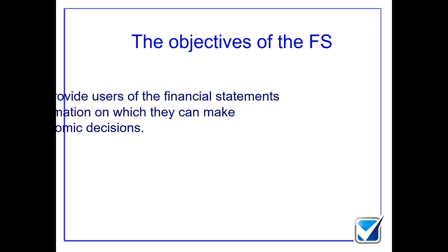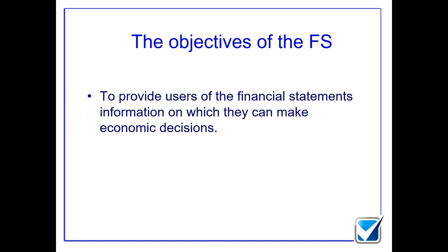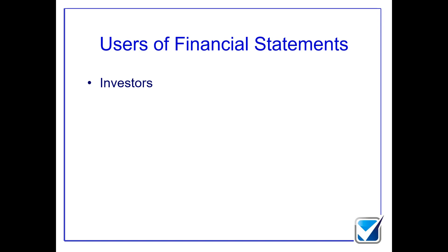The objectives of financial statements must always allow users to make economic decisions. My key user group will be investors — current and potential future shareholders. They need to know whether they should buy more shares, sell some shares, or hold on to their shares. So the buy, sell, and hold decision becomes the economic decision of our investors. However, there are other users identified within the conceptual framework — still important, but not as important as investors, because investors are the people who actually own the business.